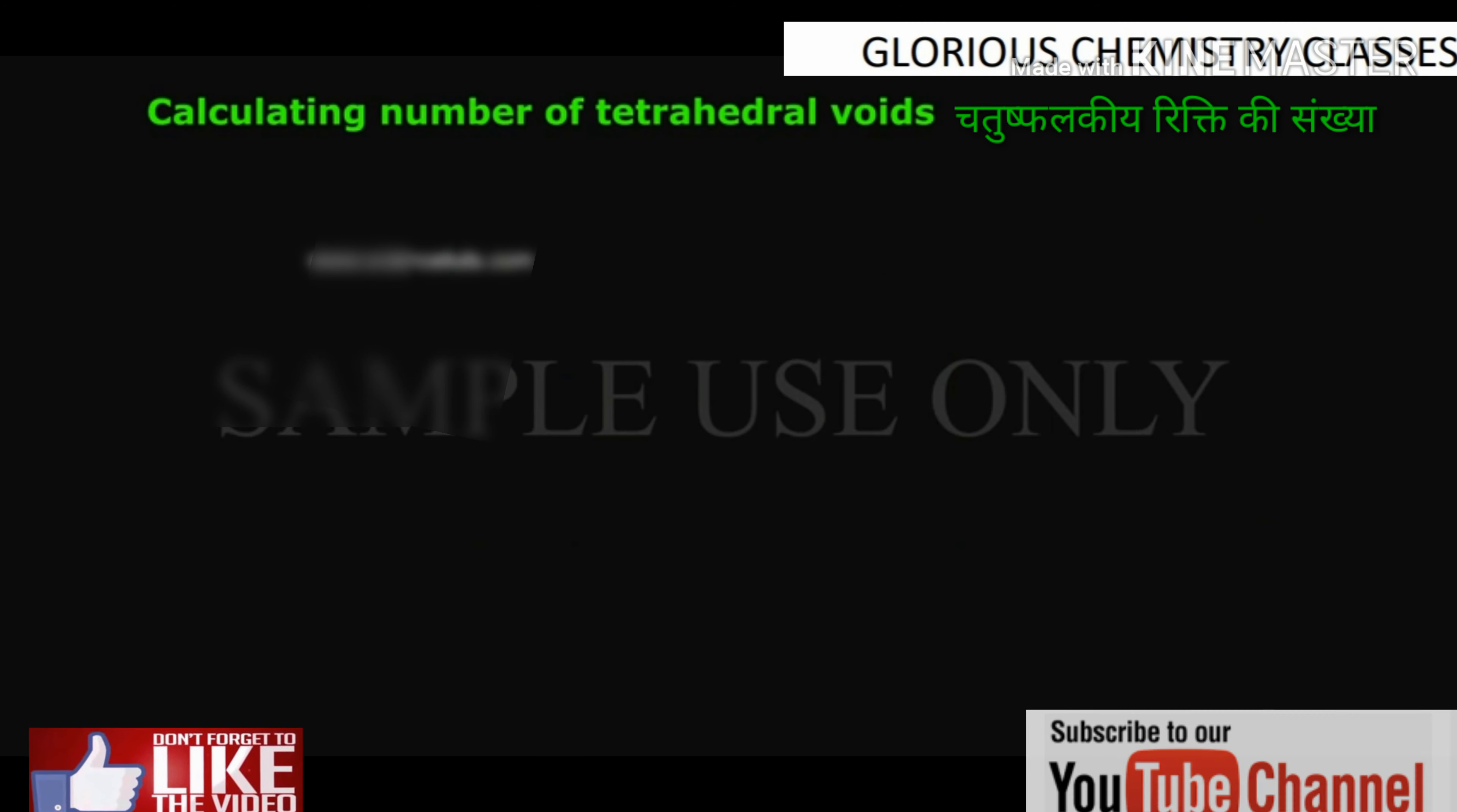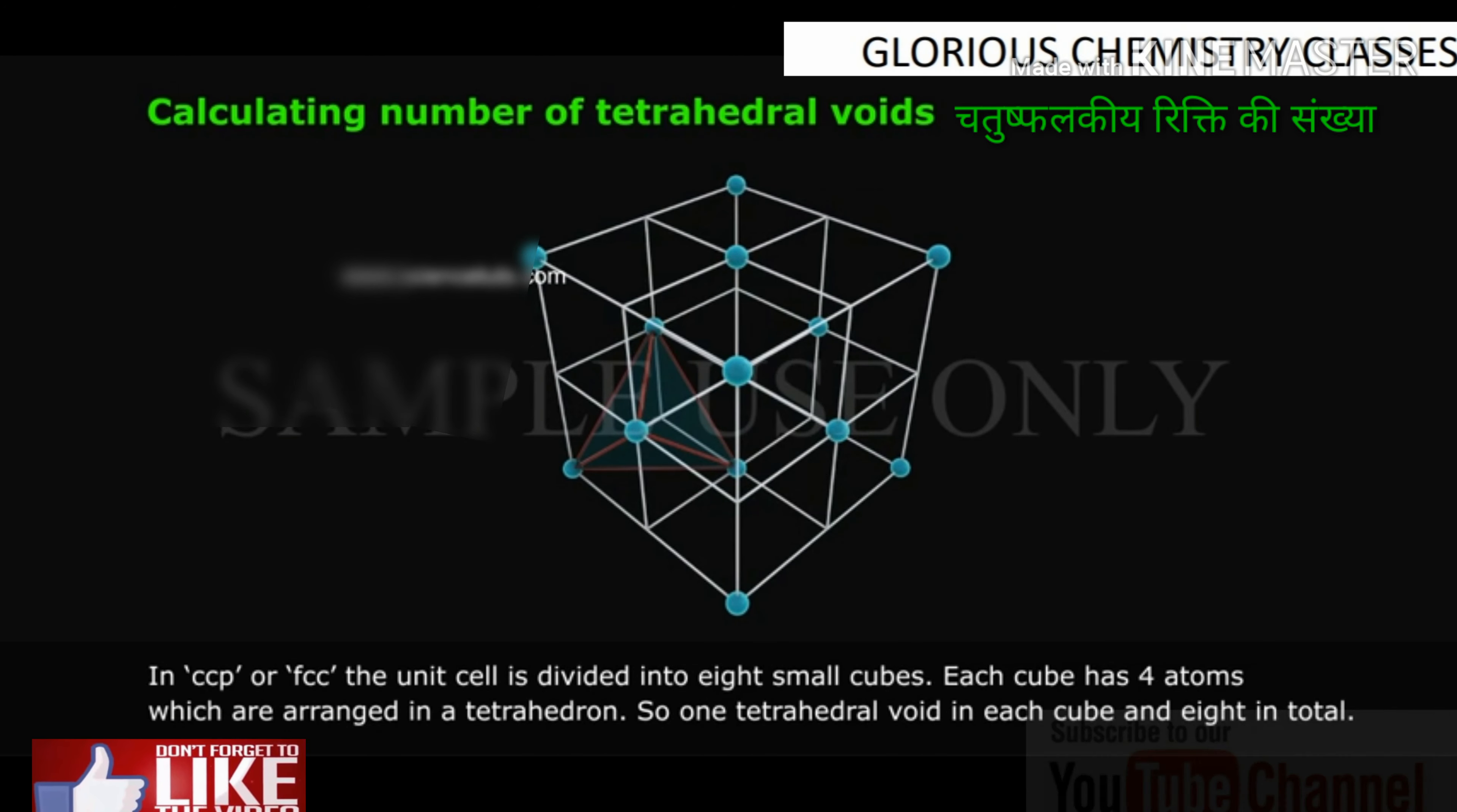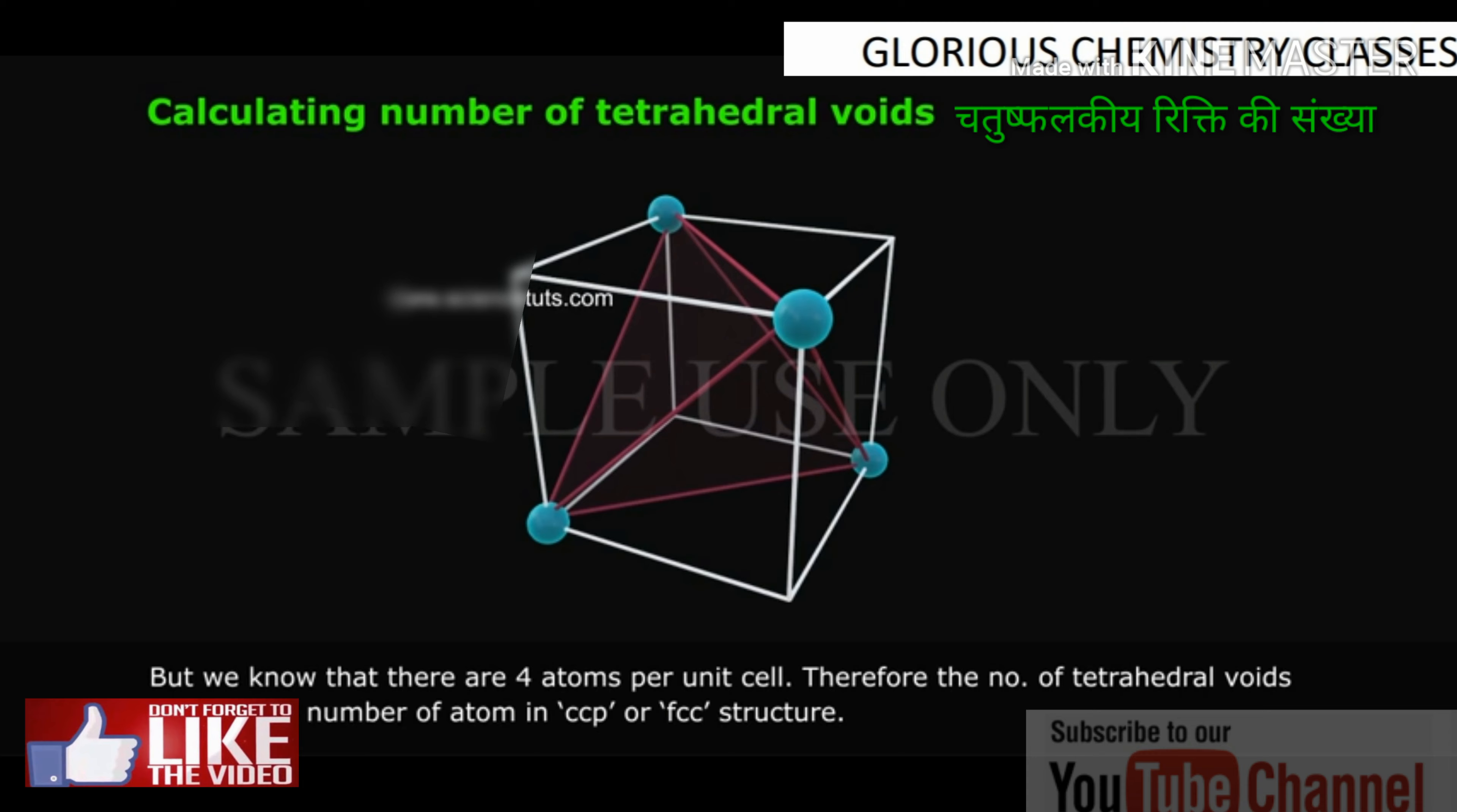Calculating number of tetrahedral voids: In CCP or FCC, the unit cell is divided into 8 small cubes. Each cube has 4 atoms which are arranged in a tetrahedron. So 1 tetrahedral void in each cube and 8 in total. But we know that there are 4 atoms per unit cell. Therefore, the number of tetrahedral voids is twice the number of atoms in CCP or FCC structure.